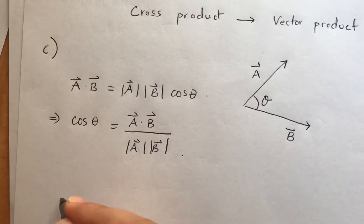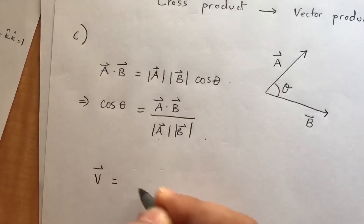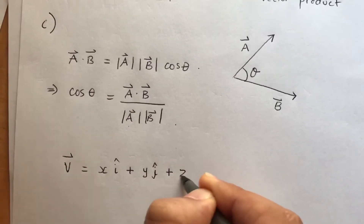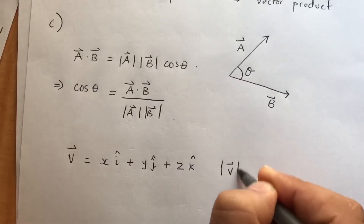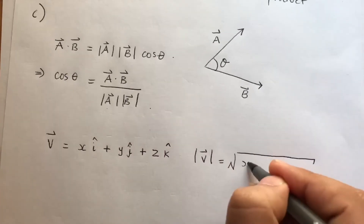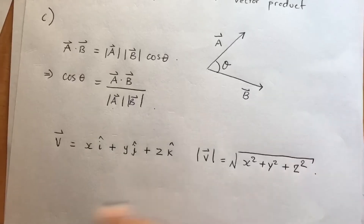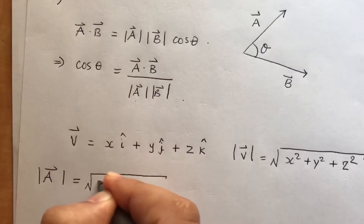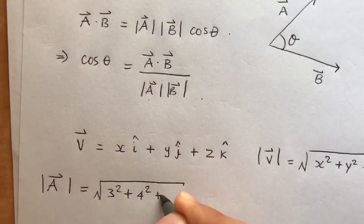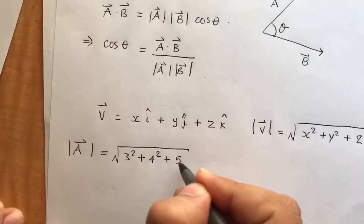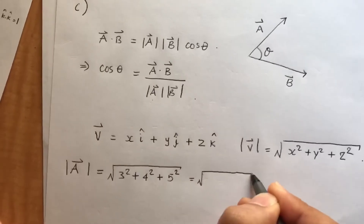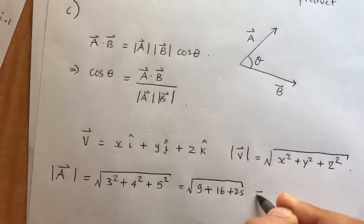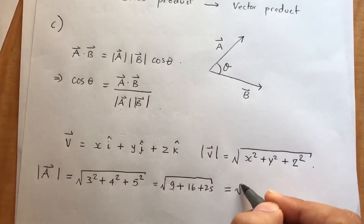We already know a·b = −38, but we need the magnitudes. For any vector v = xi + yj + zk, its magnitude is √(x² + y² + z²). So the magnitude of a is √(3² + 4² + (−5)²) = √(9 + 16 + 25) = √50.